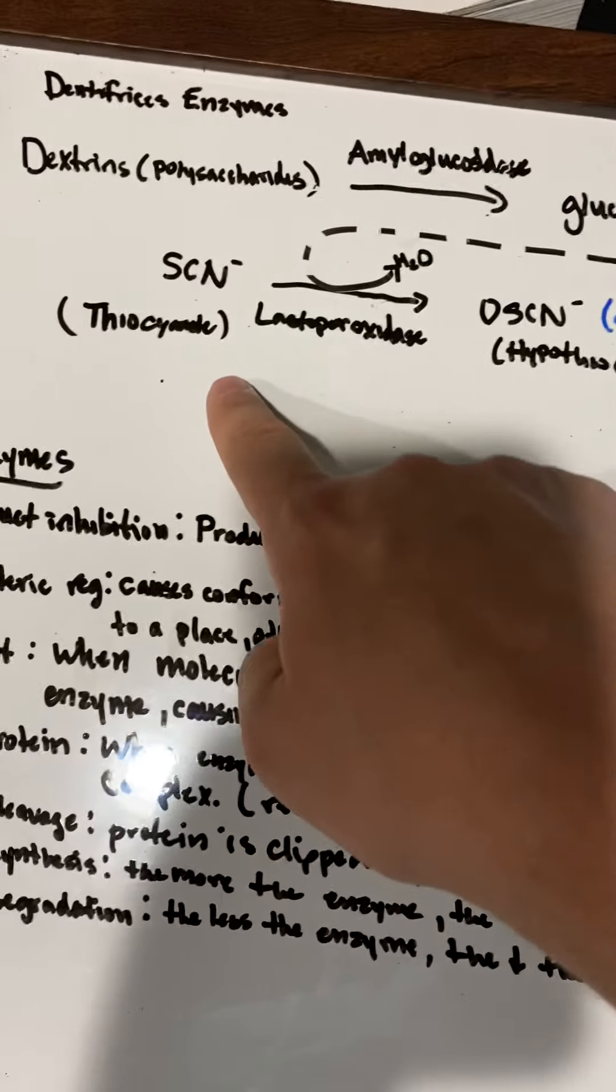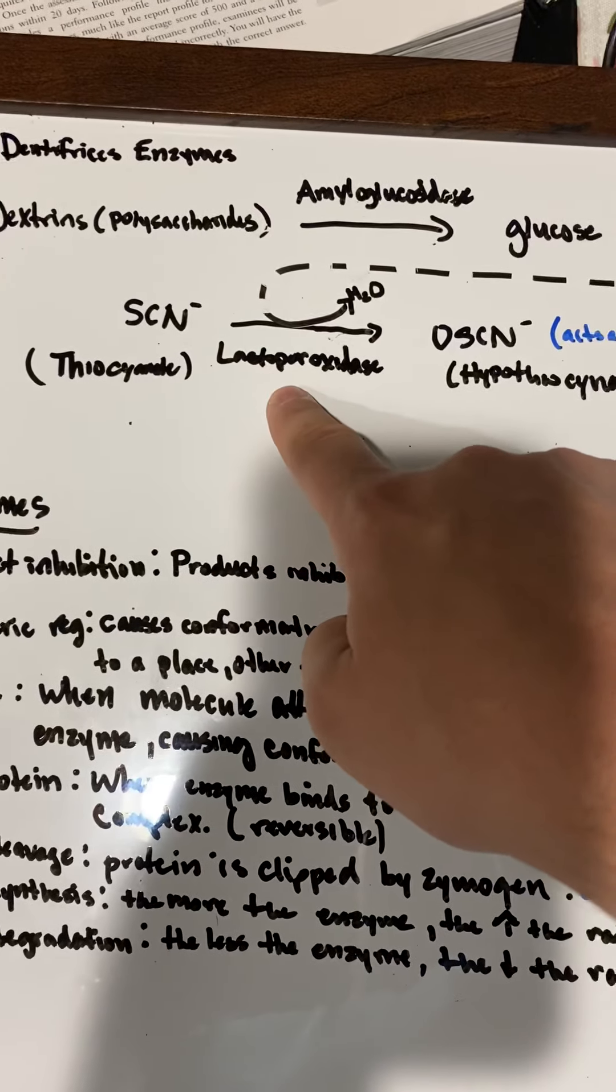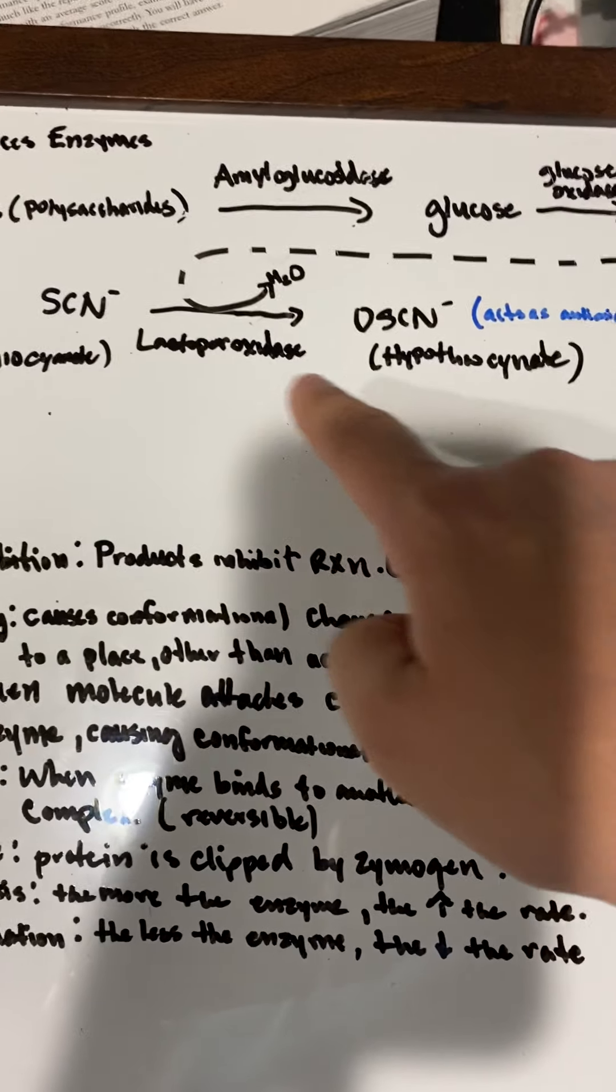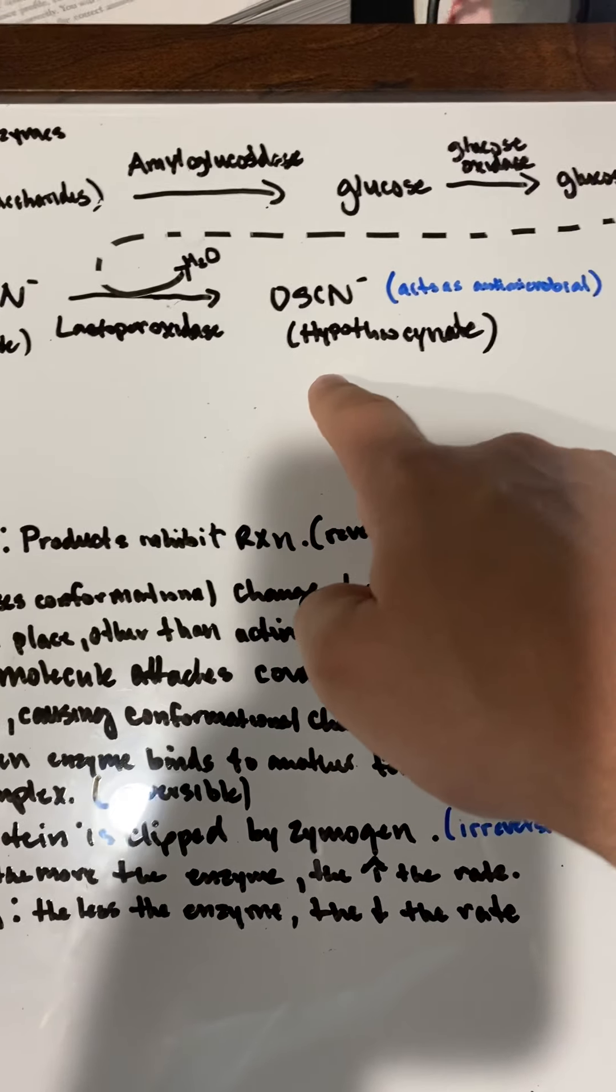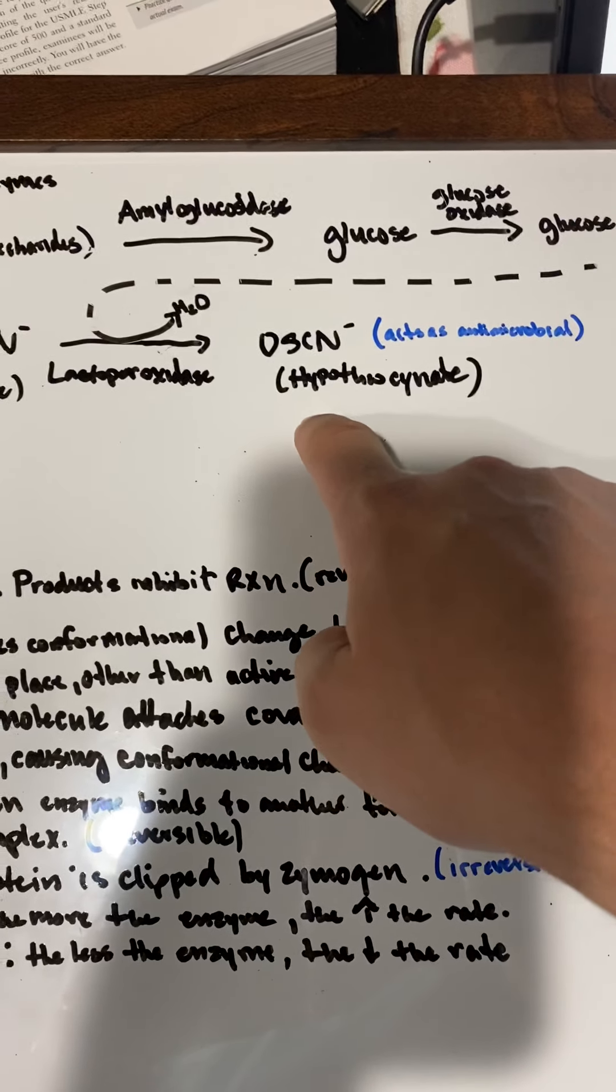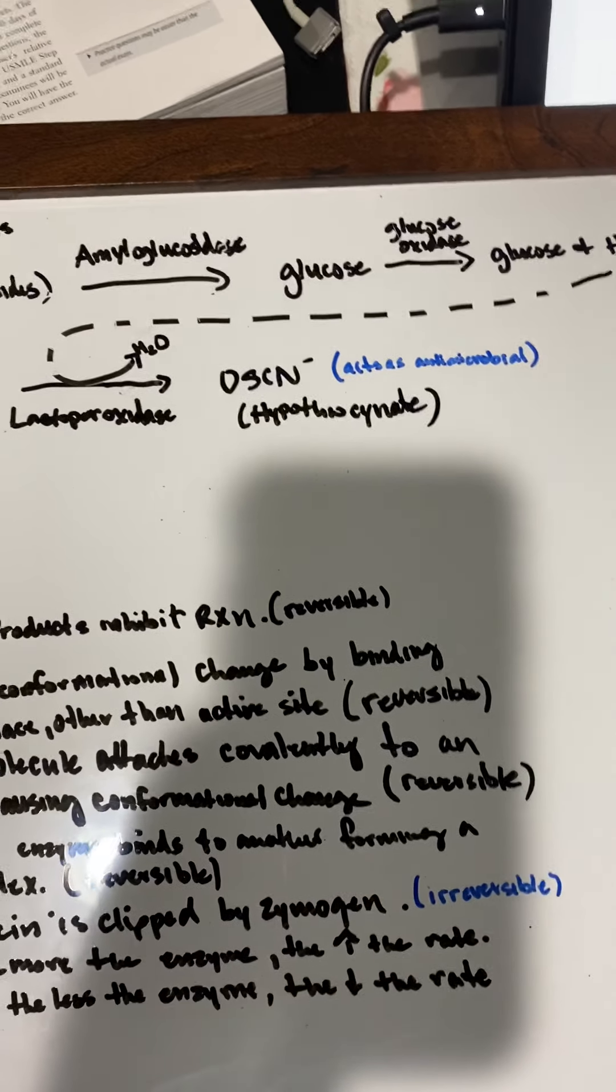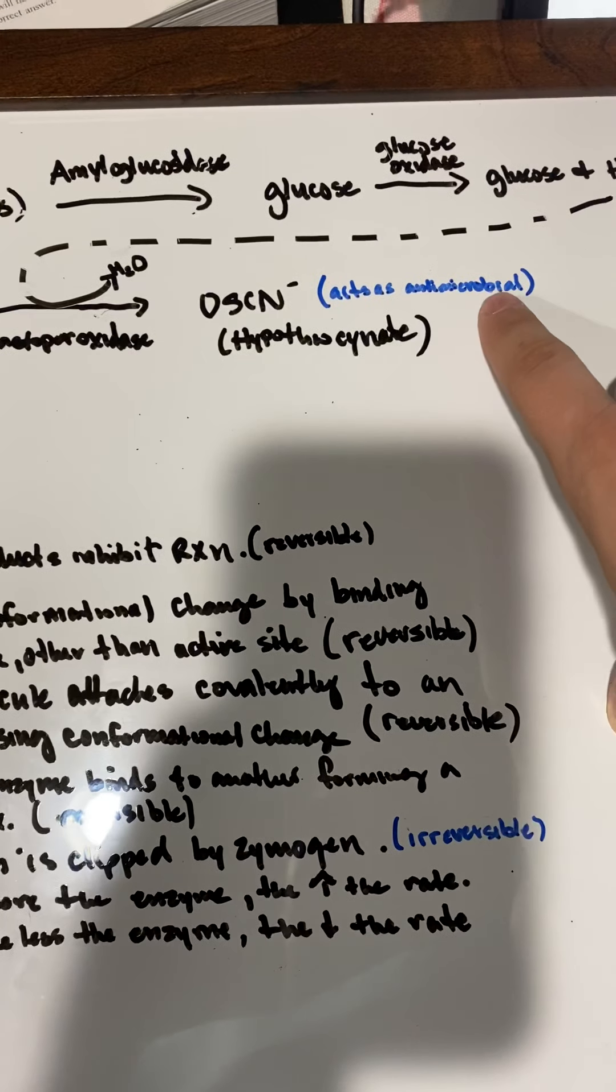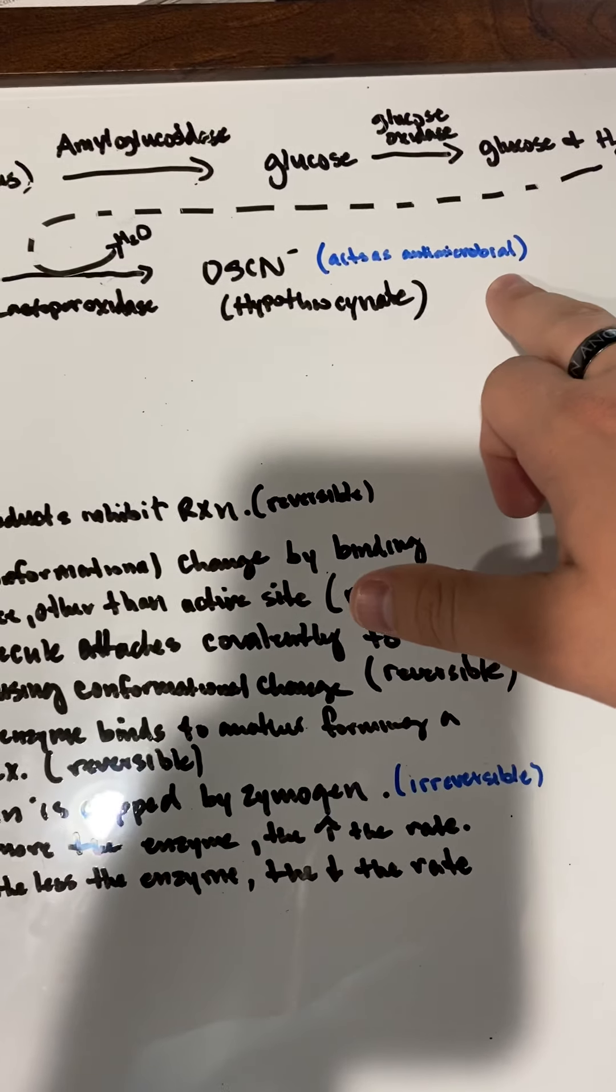This is important for the thiocyanate. You have SCN and then lactoperoxidase, which pops off water and makes OSCN negative or hypothiocyanate. This acts as an antimicrobial, which is why some toothpastes not approved by the ADA still have antimicrobial effects.